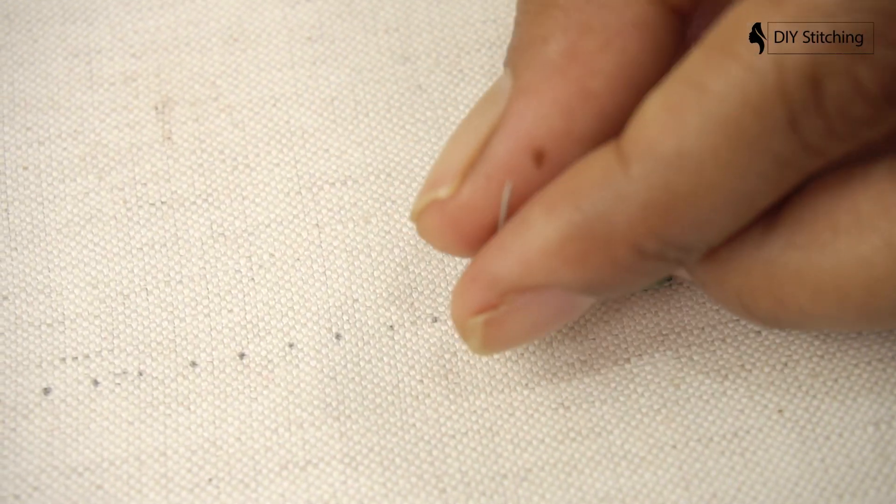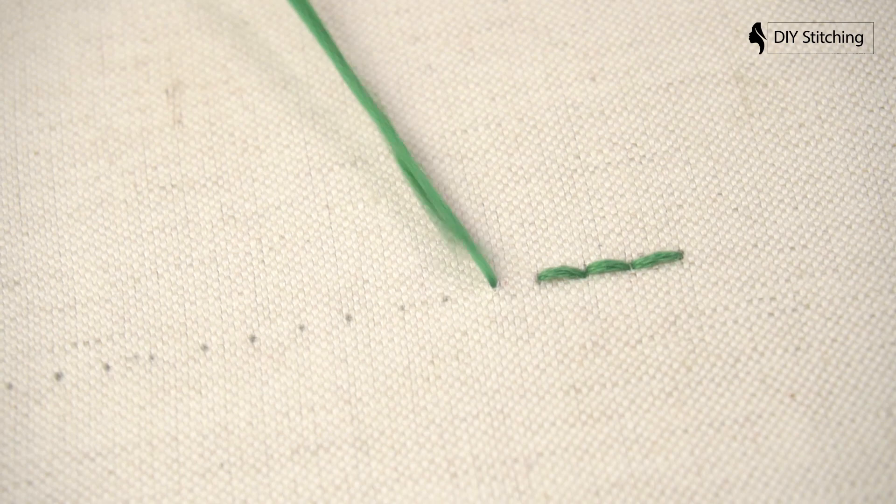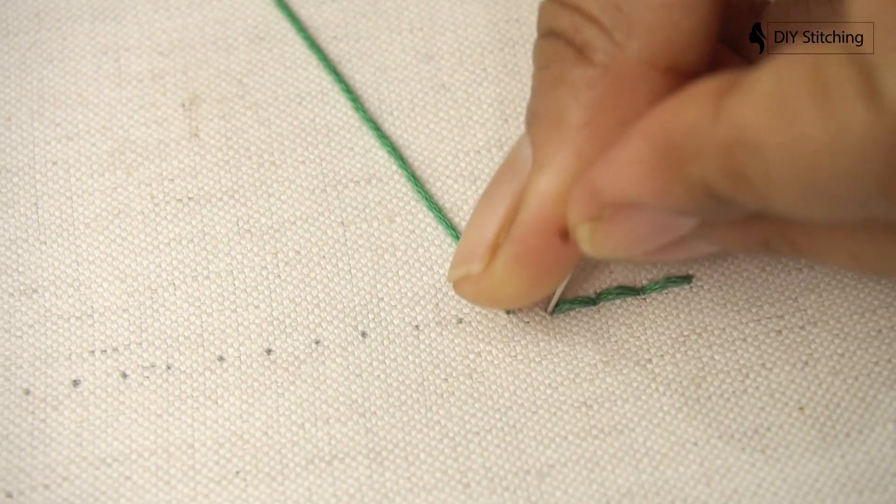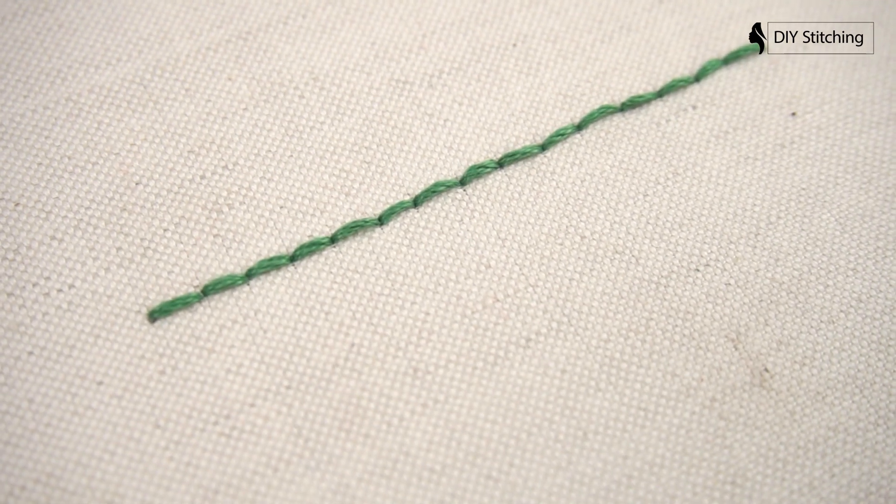Working with the stabbing method can give you a higher level of stitching accuracy. This can be specifically helpful when keeping the length of stitches consistent.